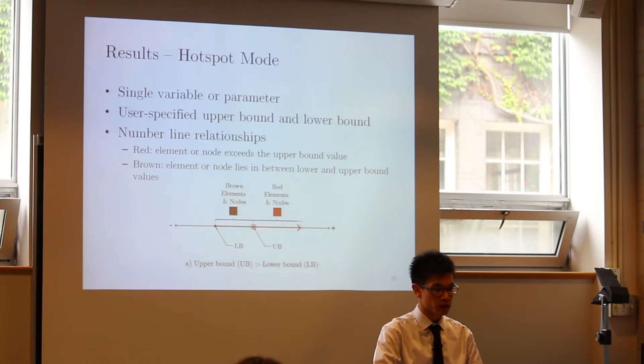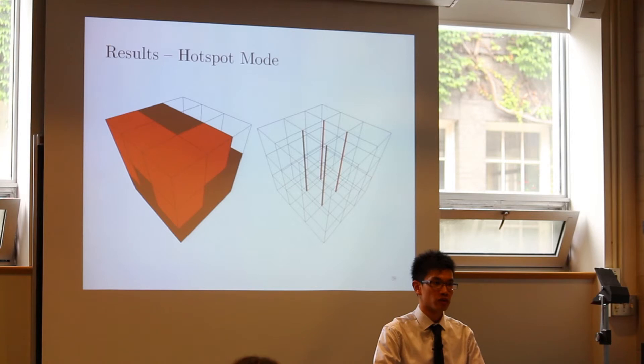Next, we have the hotspot mode, which is a more refined numerical result mode. Also using a singly selected result variable or parameter, users also enter a numerical upper bound and lower bound value. Janus uses these upper bound and lower bound values, as well as number line relationships, to highlight on the model which elements either exceed the upper bound value or fall in between the specified lower bound and upper bound value. This is illustrated here using a reinforced concrete element variable, as well as a truss element variable.